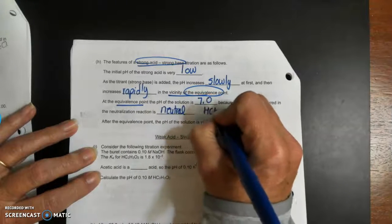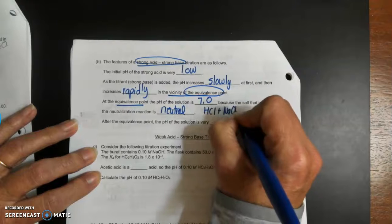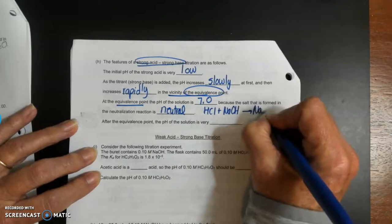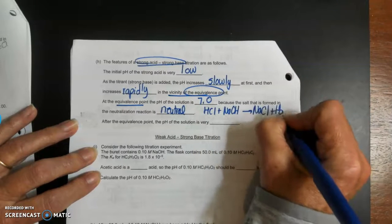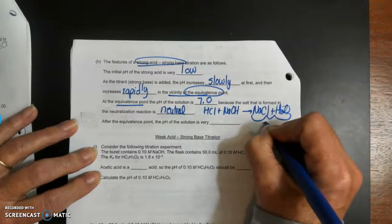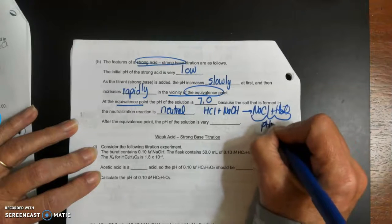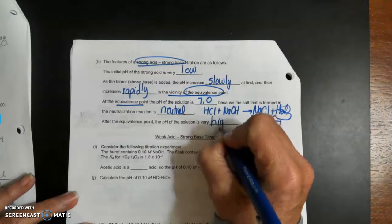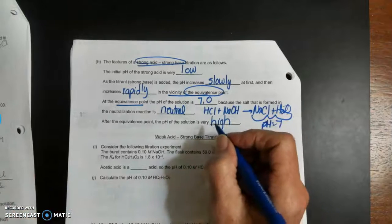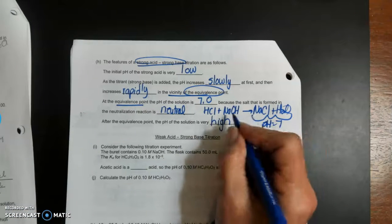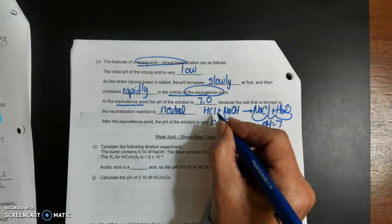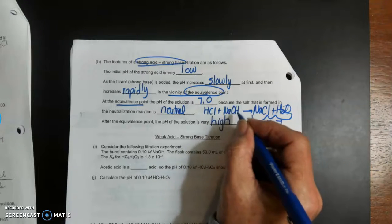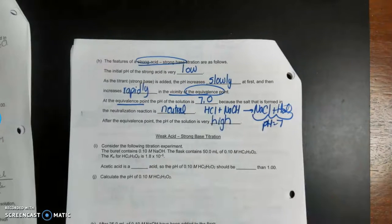So as you're adding it, initially, the pH increases slowly because, again, we're adding hydroxide. And then rapidly as we get near the equivalence point. That's why these are hard to do properly. They're hard to do properly. They take a little bit of experience. Equivalence point of the pH of the equivalence point is always 7 because it's neutral. And we can see that, right, because if you just look at the equation, all I'm making is salt and water. And that is pH of 7. And then, of course, the equivalence point afterward is high. Why? Because I'm adding more and more hydroxide.